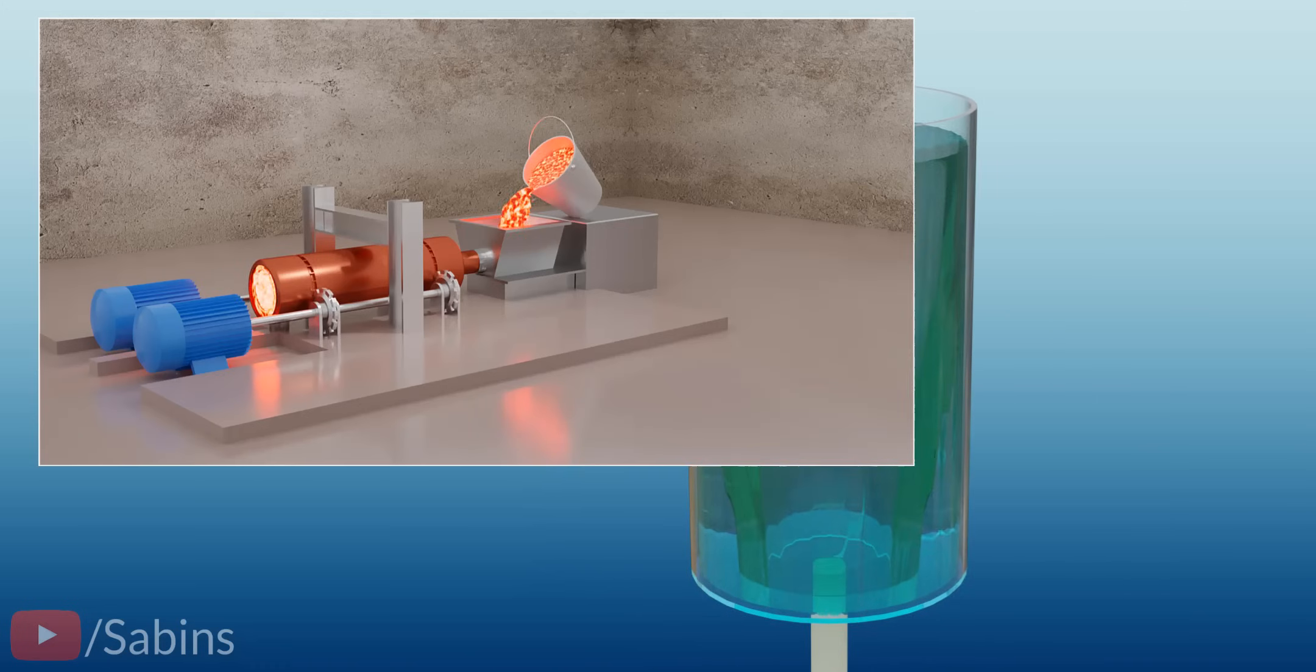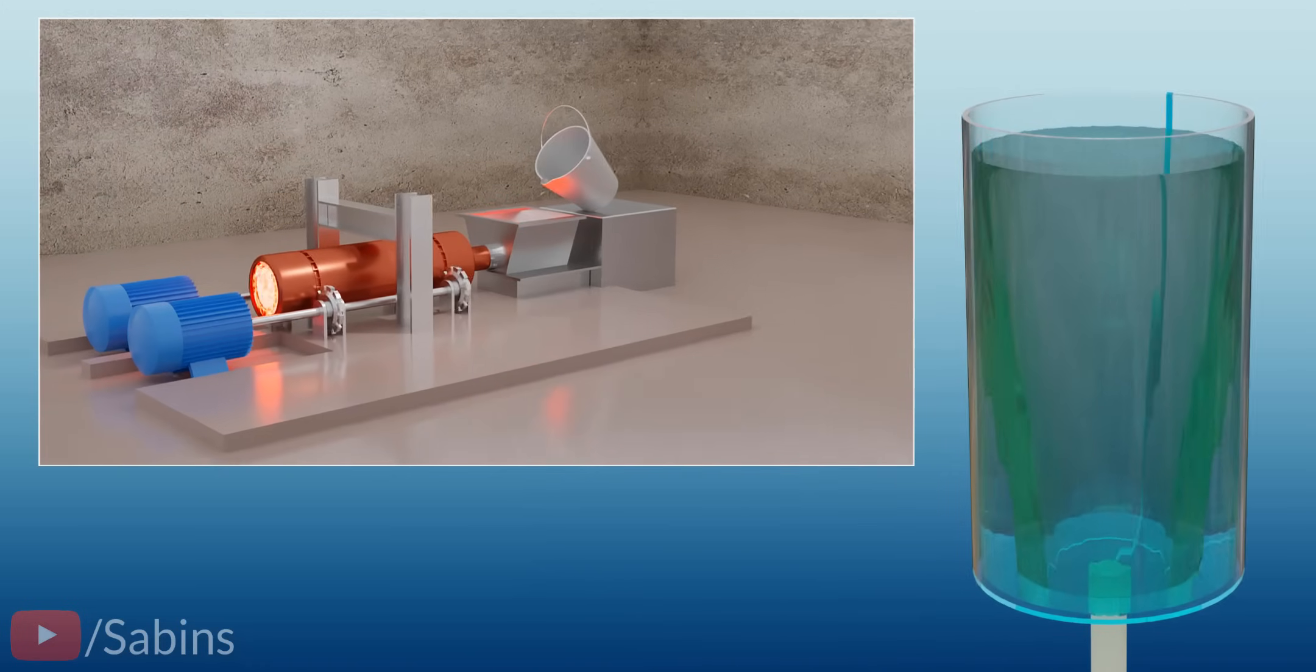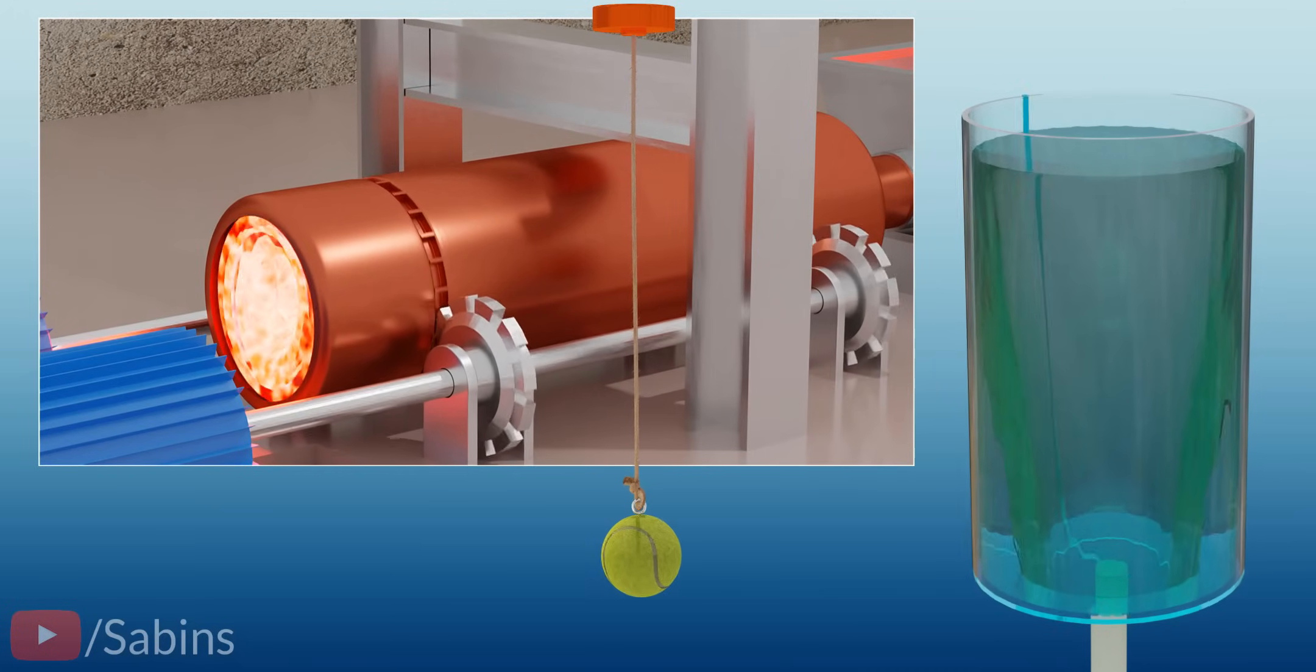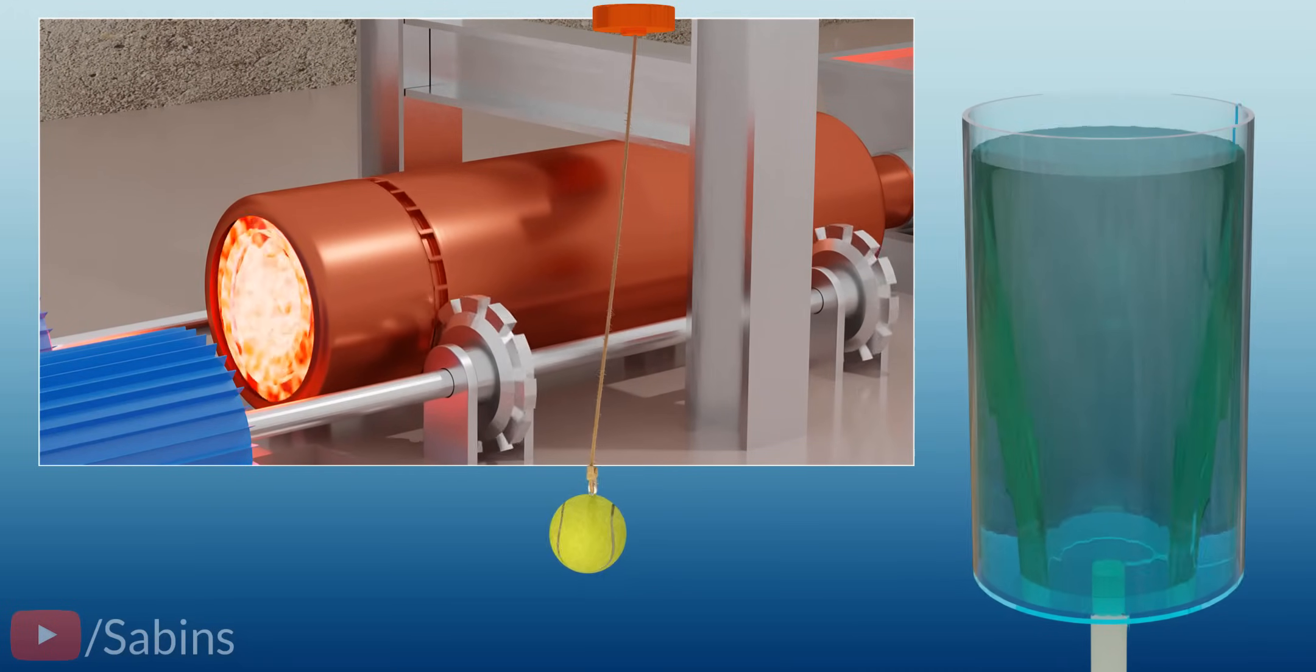Similarly, in this centrifugal casting process, the molten metal always moves to the outer wall. As you increase the speed of this suspended ball, the ball also travels outward.